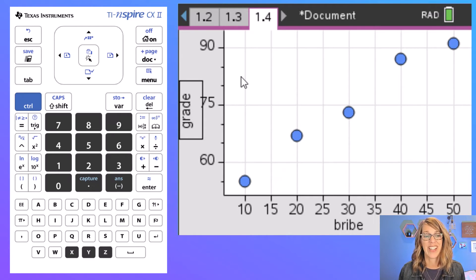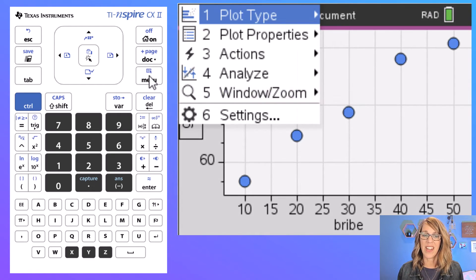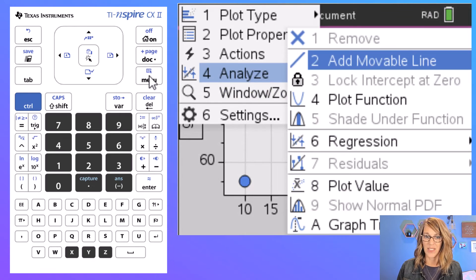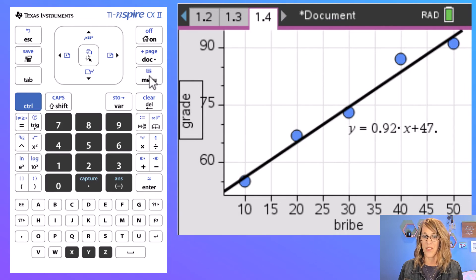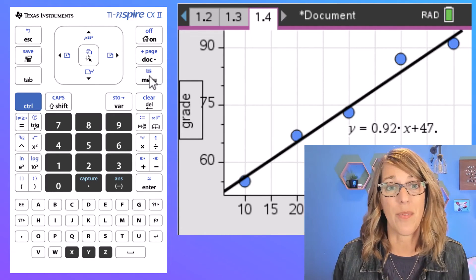I want to add the linear regression. I'm going to click on menu and then I want number four for analyze, for analyzing this graph. And we want that regression which is number six. It's going to give me those two linear regression options. I choose number one. So number one, now it gives me the linear regression equation which is really helpful.